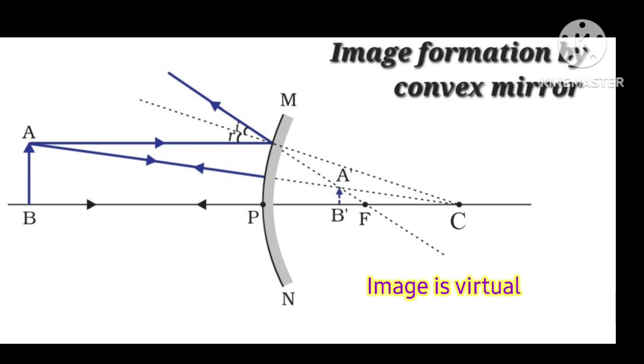Here, the image is virtual because the two extended reflected rays are meeting. Another property of the image is that it is erect.